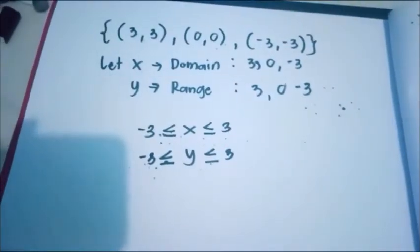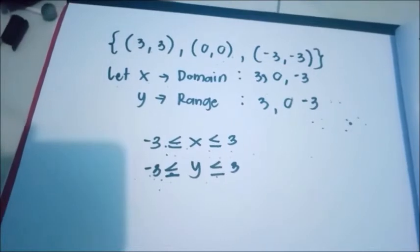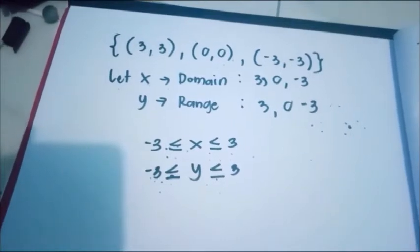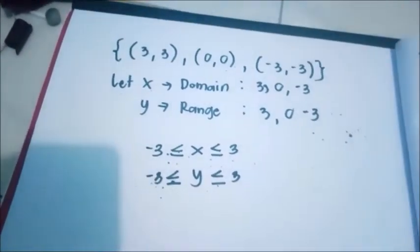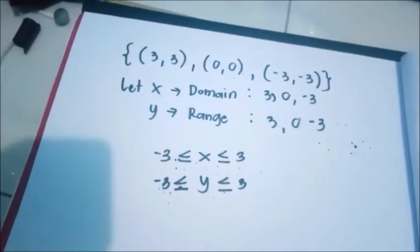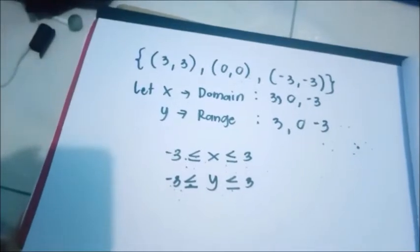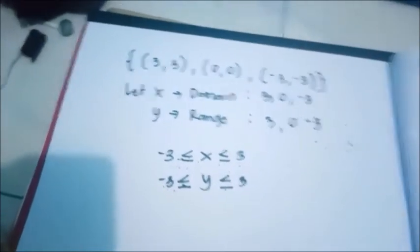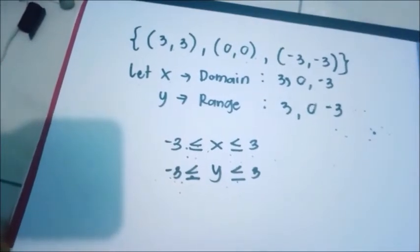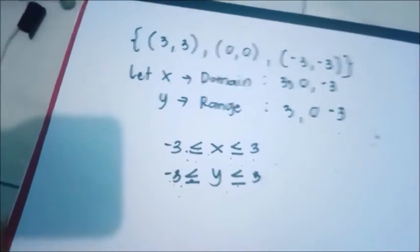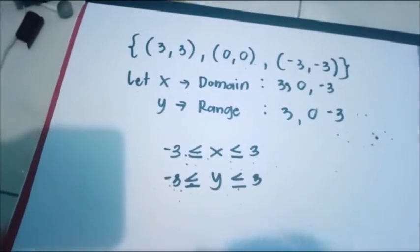Why do we use less than or equal and greater than or equal? Why do we have an equal sign? Because negative 3 is also a value of our domain and the range, because it passes through our given graph.